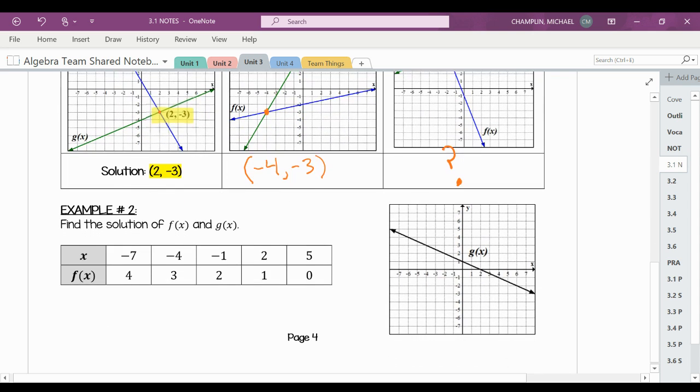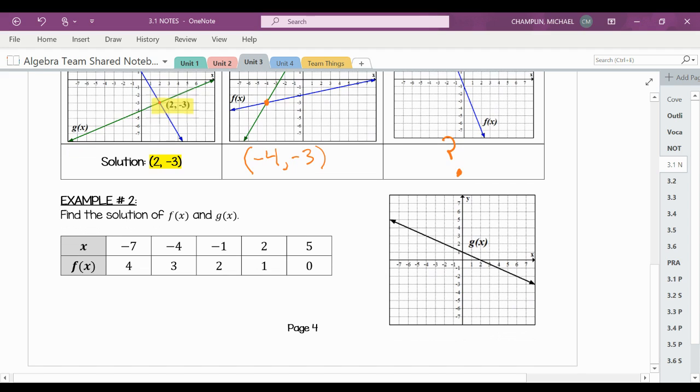Okay, now let's look at example number two. Find the solution of f(x) and g(x). Well, f(x) is right here on my table. This is my f(x). And g(x) is on this graph, right? And it's the line right here on this graph.